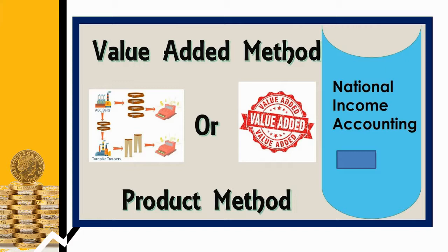The value of cotton enters the value of yarn as cost, and the value of yarn enters the value of cloth, and that cloth becomes a garment. From cotton to garment, at every stage value added should be calculated. But what happens is each and every cost is being calculated again and again — from cotton, then cotton to yarn, then yarn to cloth, and then cloth to garment. It is counted double times; that is called double counting.